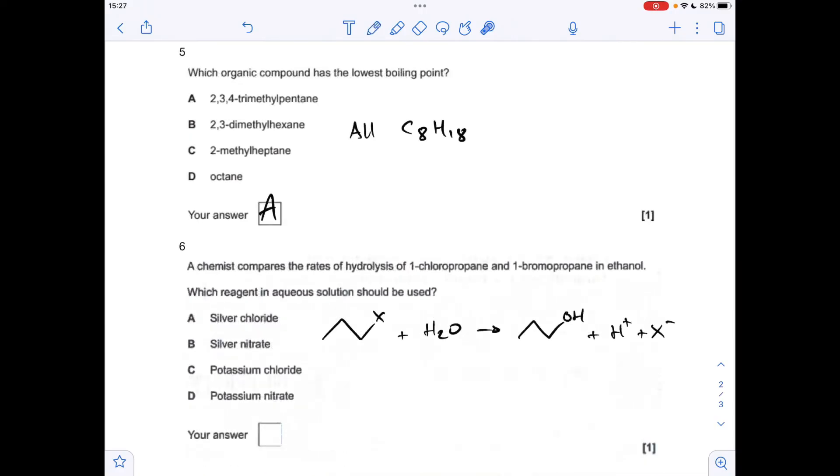So moving on to number 6 now. So I've just drawn up a generic equation for the hydrolysis of these two haloalkanes. X just represents the halogen. So you can see that we've got a halide ion in solution at the end of the reaction. So we need a chemical that can detect that. And the answer is silver nitrate. So aqueous silver nitrate will be used. So the answer is B.